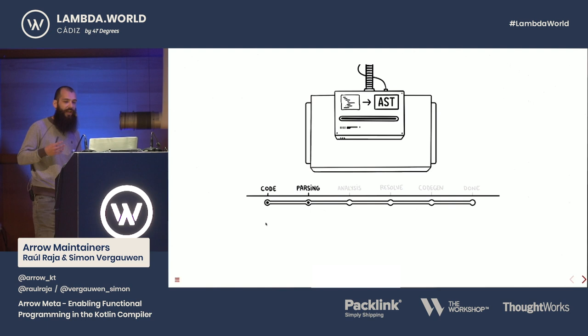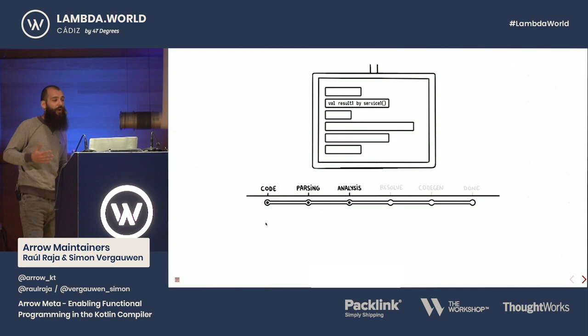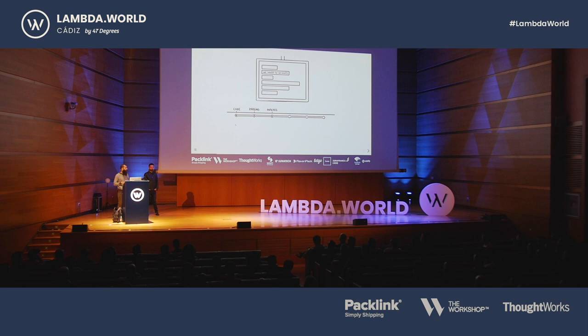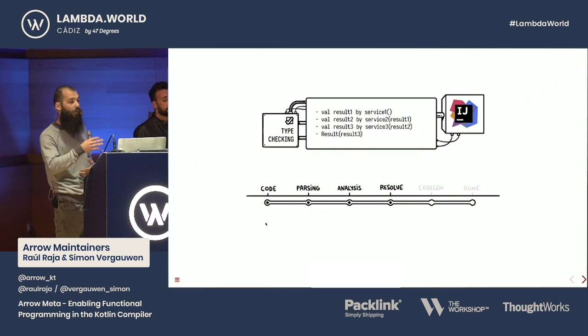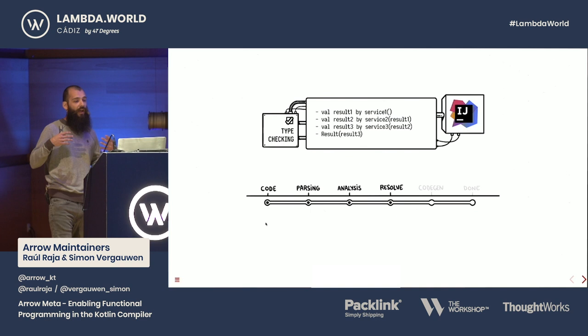This gives us tight integration with the tooling. Once the AST is parsed, the compiler moves into the analysis phase. During the analysis phase, the compiler will try to give semantics to this tree in context of the Kotlin language and the Kotlin type system. After that, once the semantics have been given, the compiler will move into type checking in the resolution phase, which is also part of the analysis phase. In this phase, the actual type checking happens.